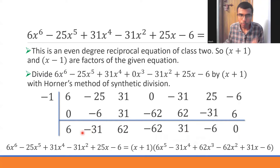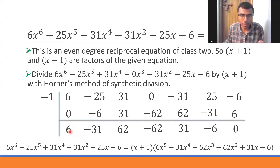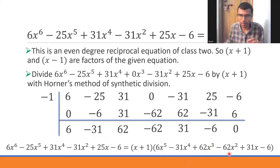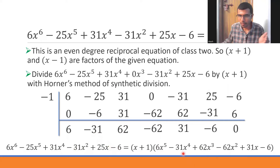The numbers obtained are the coefficients of a degree-5 polynomial, since we divided a degree-6 expression by a linear polynomial. So: 6 is the coefficient of x⁵, -31 of x⁴, 62 of x³, -62 of x², 31 of x, and -6 is the constant. The original expression can be written as (x+1)(6x⁵ - 31x⁴ + 62x³ - 62x² + 31x - 6).